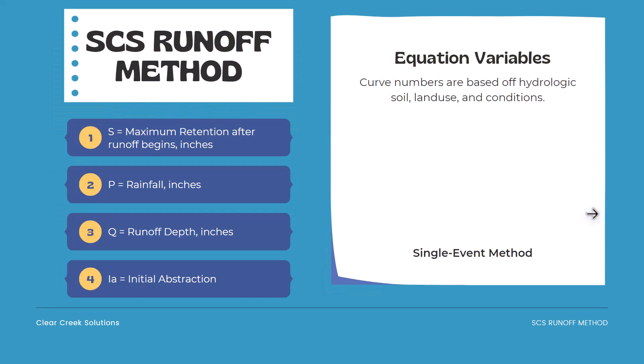So what are the variables included? S equals maximum retention after runoff begins, in inches. P equals the rainfall in inches. Q equals the runoff depth in inches. And I-sub-A is the initial abstraction of water into the soil when it falls on the project area.